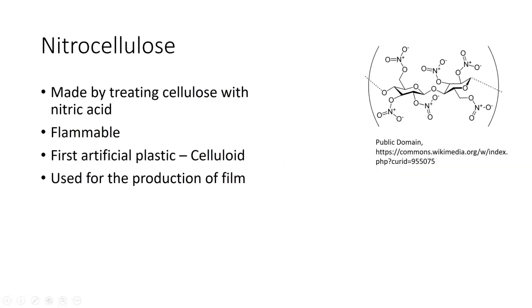First thing we look at: they found out that if you treated wood with nitric acid, you made something called nitrocellulose. Nitrocellulose was a flammable type material that burns very easily. It was used to make the first artificial plastic, which was called celluloid.